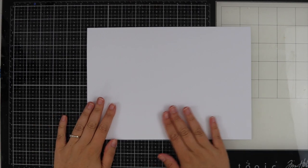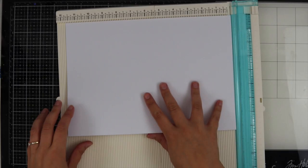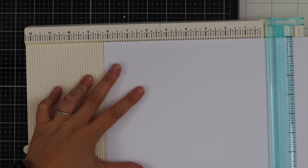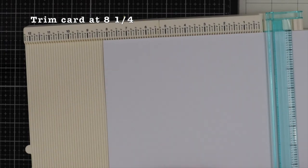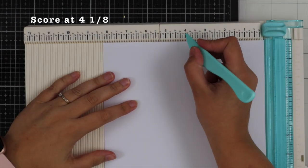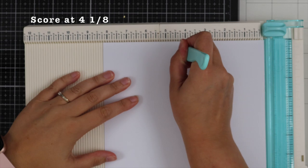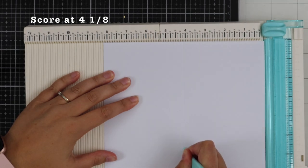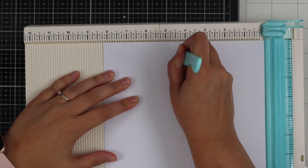To start with, I'm showing you how I made my card base. I have an A4 piece of card, placing it on my scoring board. I'm going to trim the card at just over eight inches.